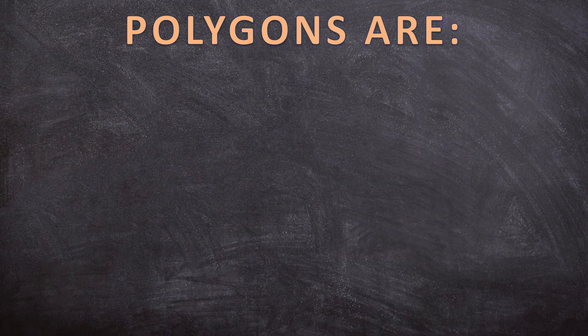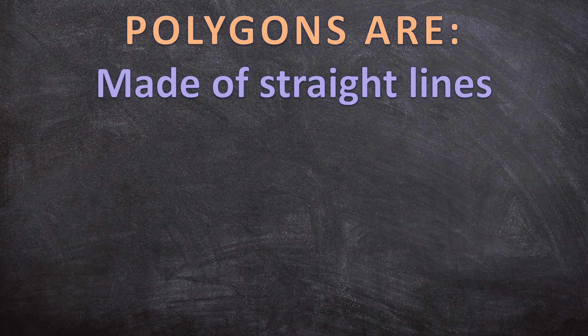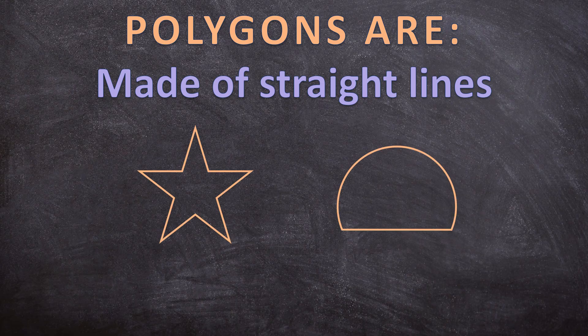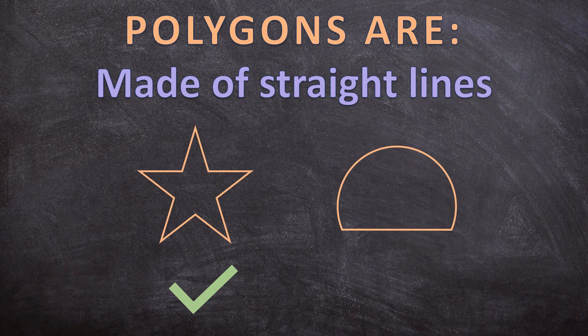The second characteristic of polygons is that they are made out of only straight lines. Both of these shapes are flat, but the star on the left is made out of only straight lines, so the star is a polygon. The second shape on the right is also a flat shape but it doesn't only consist out of straight lines — it also has a curved side, so this is not a polygon.